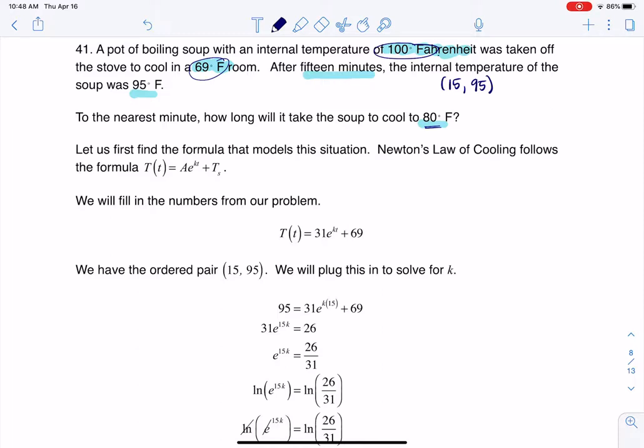Just eyeballing it, I would say if it took 15 minutes just to lose 5 degrees temperature, going from 100 to 95, that maybe it's going to take like another 30 or 40 minutes to get all the way down to 80.